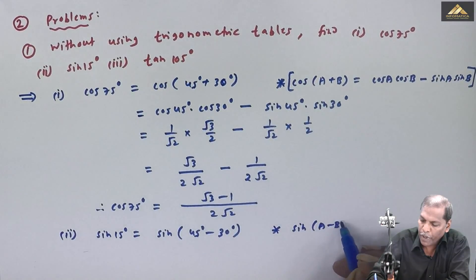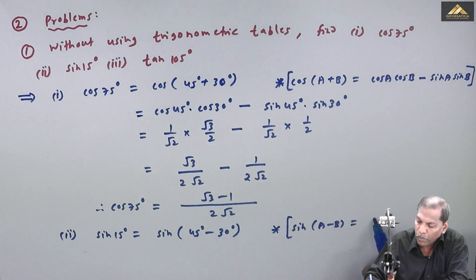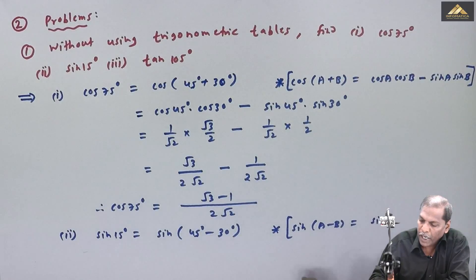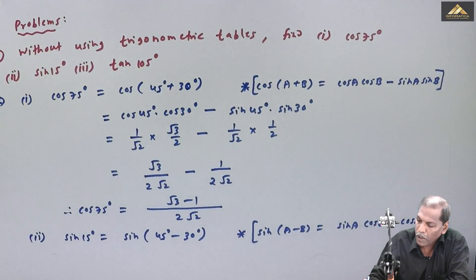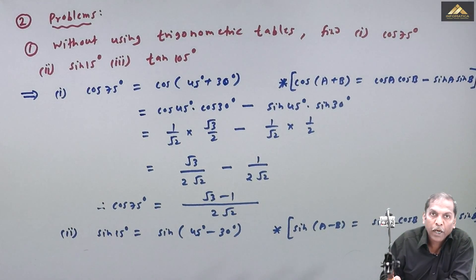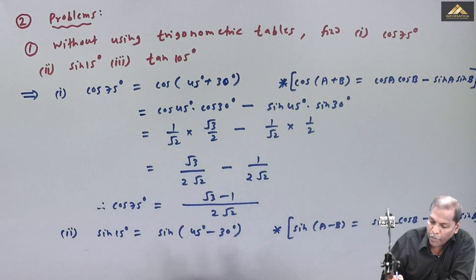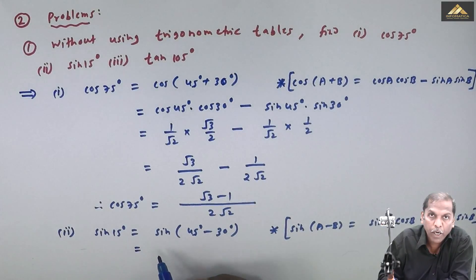So sin of (a minus b) is equal to sin a cos b minus cos a sin b. This is the formula for sin of (a minus b). If we apply this formula here, we will get is equal to...